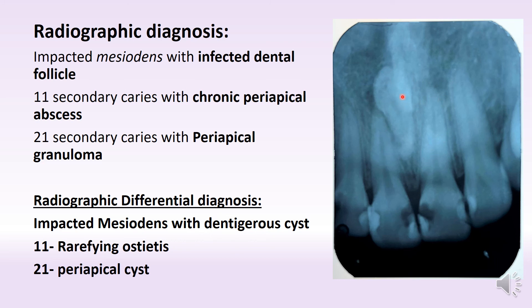Now the differential diagnosis gets interesting because for the mesiodents, when we are talking about an infected follicle, it could also mean that a widened follicle indicates a dentigerous cyst. Now how do we differentiate the two? Generally, in an infected follicle, the follicle should be very irregular.